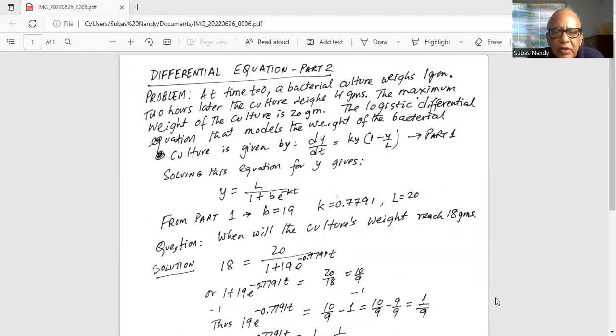The logistic differential equation that models the weight of the bacterial culture is given by derivative of y with respect to t is equal to ky times one minus y over L. This equation was shown in part one.